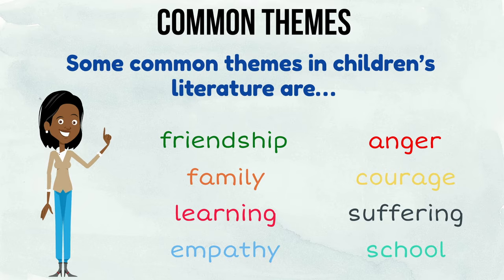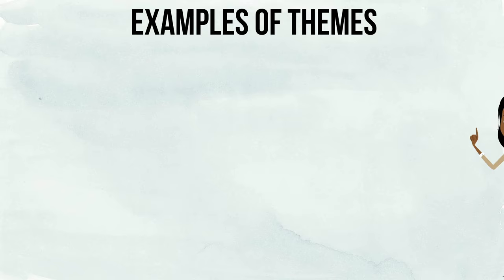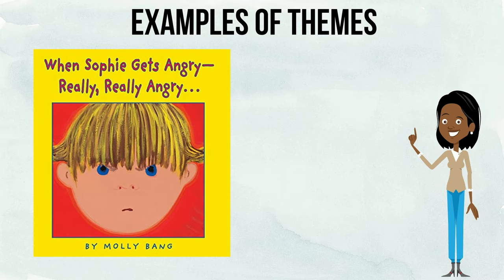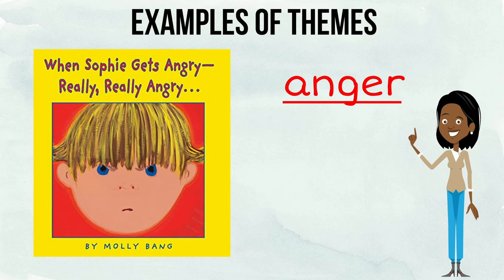Let's take a look at a few examples. In the story When Sophie Gets Angry, Really, Really Angry by Molly Bang, the theme is anger as the main character learns how to manage her emotions.